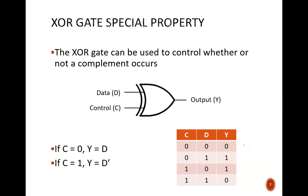But now, let's call one input the control and one input the data. Whenever control equals zero, notice how the output equals the data input. Whenever control equals one, notice that the output is the complement of the data input.